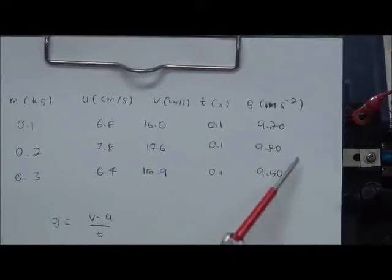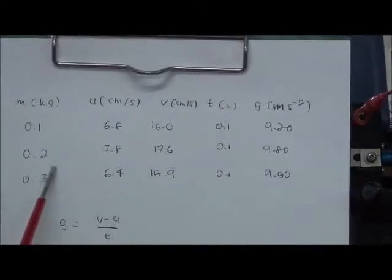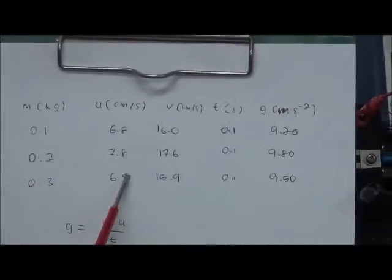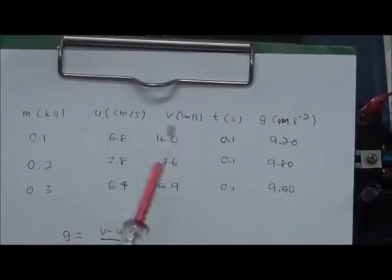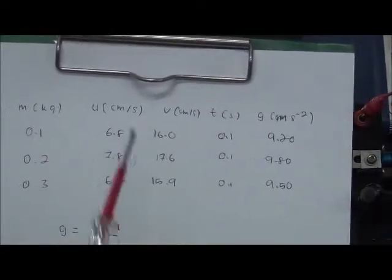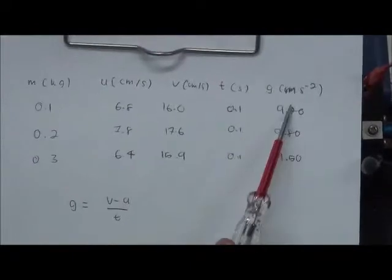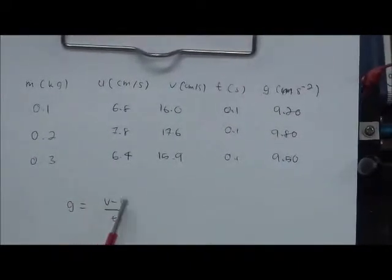And by using 0.3 kilogram, we got 6.4 for the initial, 15.9 for the final, and 9.5 for the gravitational force. So how we got this data G is by using this formula: V minus U over T.